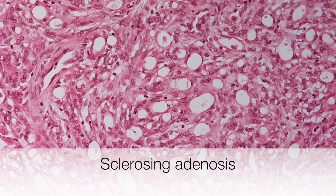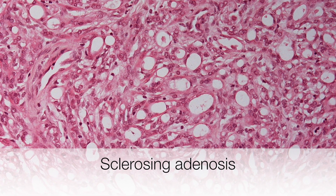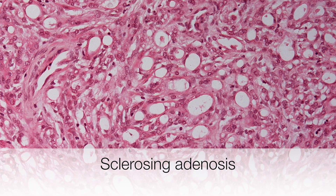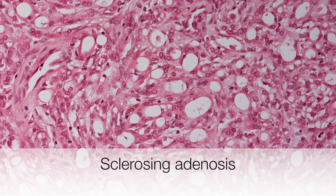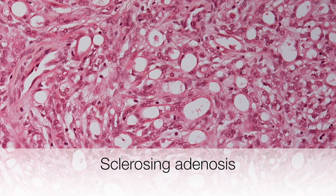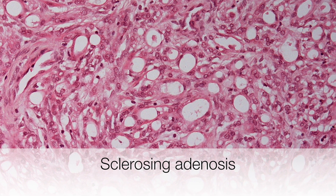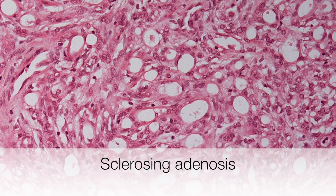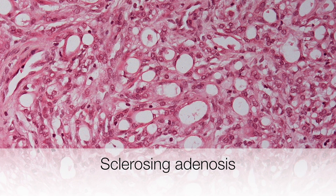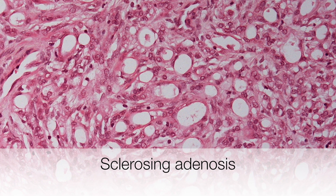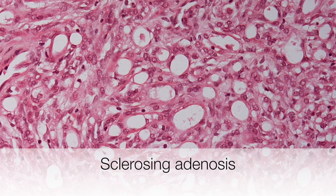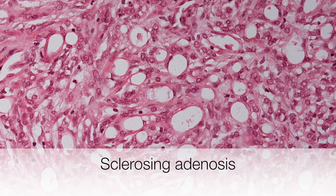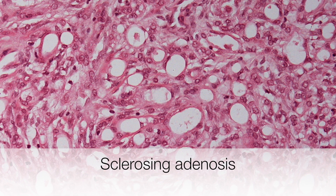Here is an example of sclerosing adenosis. As the name implies, there is an element of sclerosis and also adenosis, i.e., proliferation of glands with a background of sclerosis.